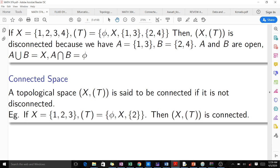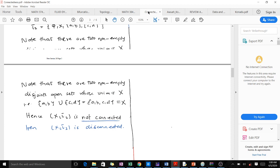When it comes to this one, we realize that we have this topological space {1, 2, 3}. Our topology is {∅, X, {2}}. We realize that we don't have any two empty sets here such that they are disjoint and their union is equal to X. So we see this topological space is connected.